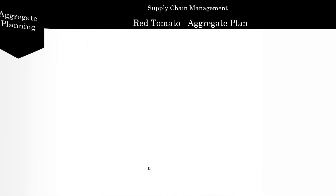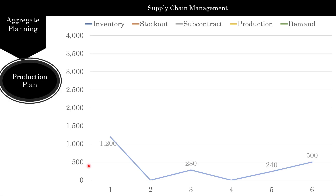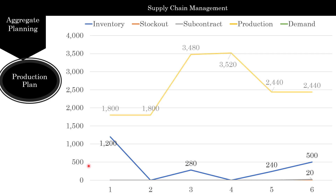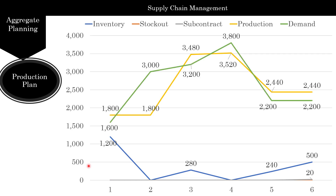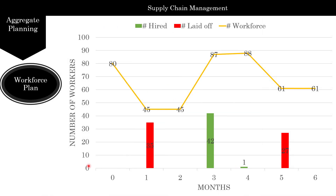So let's analyze the solution. We have our new production schedule right around here. We talk about what the inventory is going to be, the workforce plan here, and you have your different solutions. Here is the inventory — no stock out, no subcontracting — and here the production and demand almost follow each other. And here we have your workforce plan. You can fire people, hire people, because the cost is cheap.